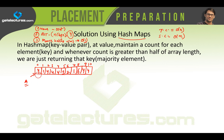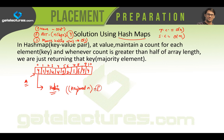For every element, we are going to apply hashing using the hash formula. Generally the hash formula we use is key mod n, which gives us the position in which we are going to store the elements. The range of numbers here is between 0 to 10.